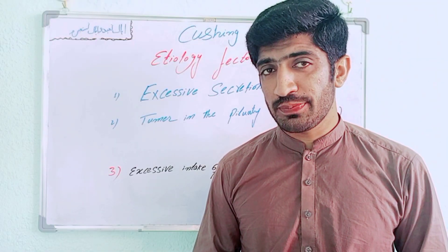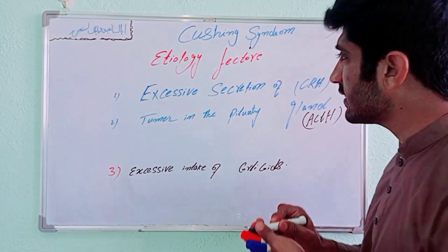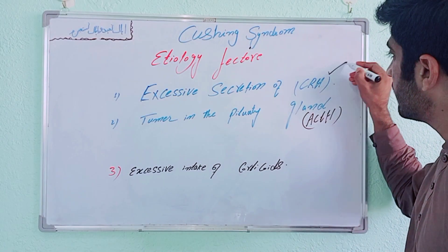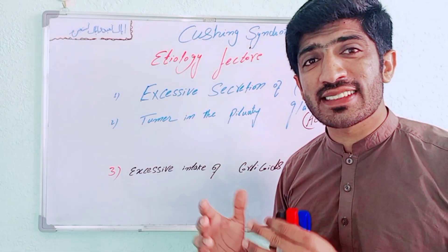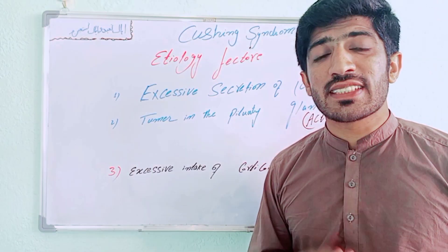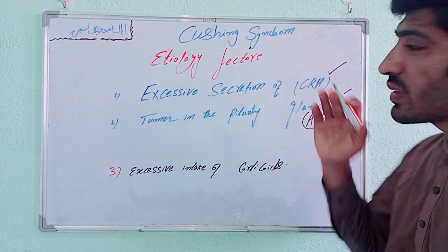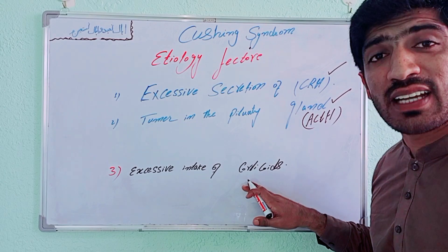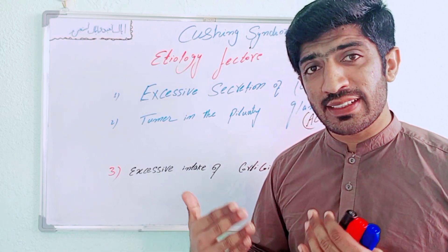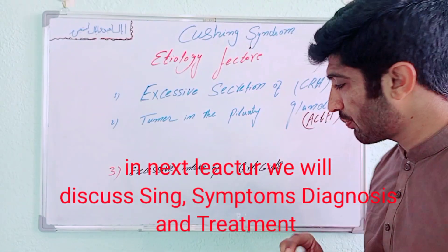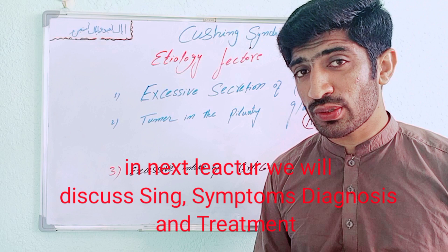Now, what are the etiological factors of Cushing syndrome? First is excessive secretion of CRH from the hypothalamus. Second is a tumour in the pituitary gland, because the pituitary gland creates ACTH which stimulates cortisol secretion from the adrenal gland. Third is excessive intake of corticoids artificially — if any person takes corticoids in the form of medication orally or by injection, it also causes Cushing syndrome.